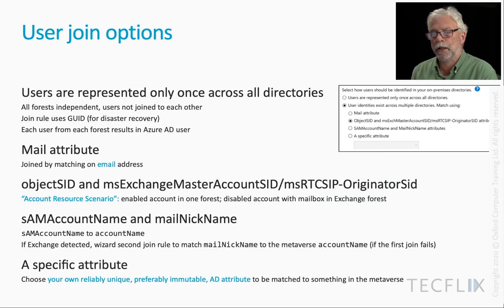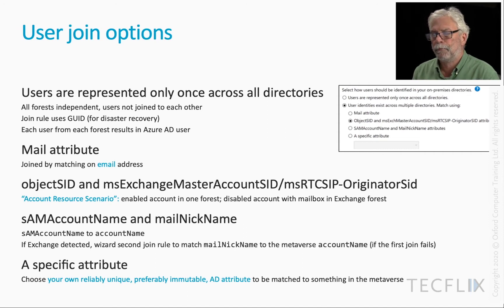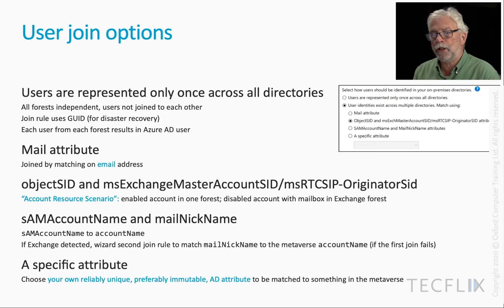The next option is the one we've used in our custom installation and demos. We chose SAM account name and mail nickname. SAM account name to account name is normally used, but where Exchange is detected, the wizard writes in an additional join clause: mail nickname matches the metaverse account name. If the first clause fails, the second one can potentially succeed. The last option is where you know a specific attribute that is reliably unique, immutable — preferably an AD attribute — that can be used to match on something in the metaverse.